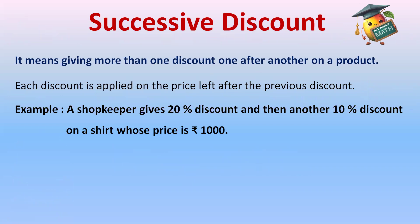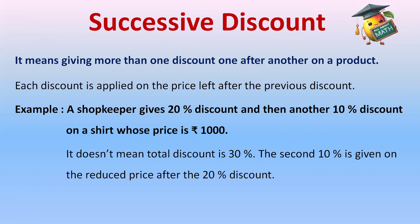A shopkeeper gives 20% discount and then another 10% discount on a shirt whose price is 1000 rupees. These two discounts one after another make it a successive discount. To calculate this, we do not simply add 20 and 10 to get 30% total discount — that is wrong. The second discount of 10% is given on the reduced price after the 20% discount.